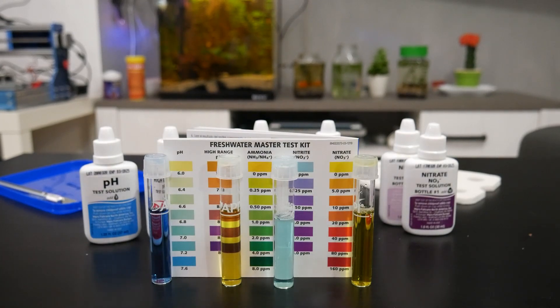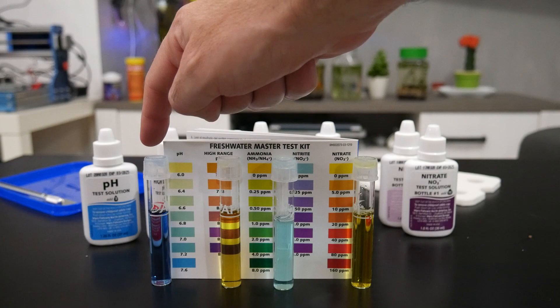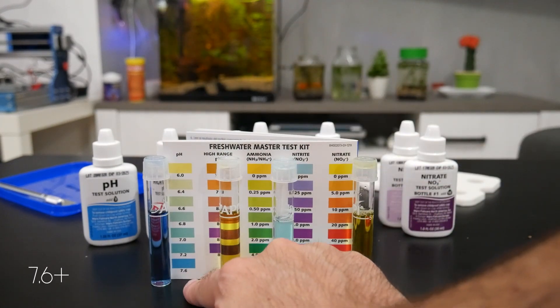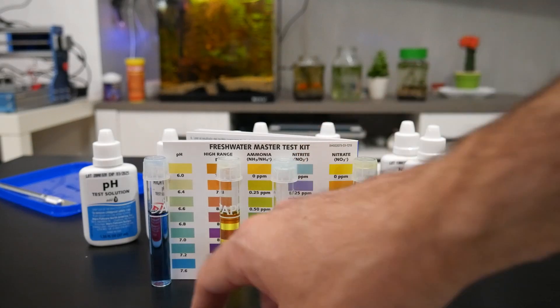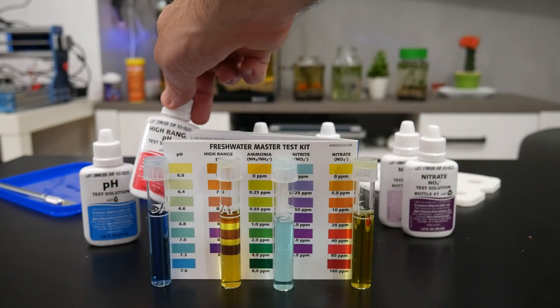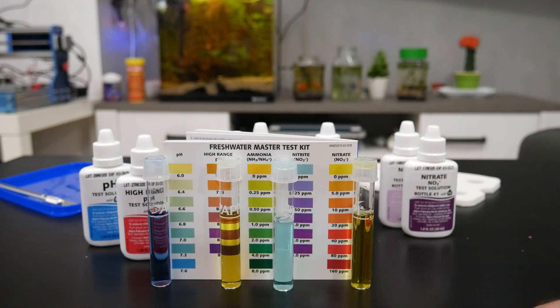So here are the results. If we examine the pH tube, we can see that it's maxed out in this chart around 7.6. So we need to check with the high range pH values. We'll do it right after this.